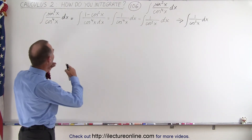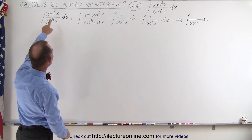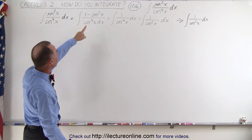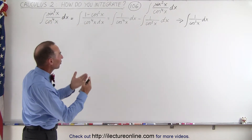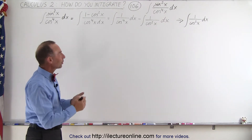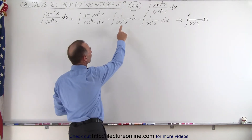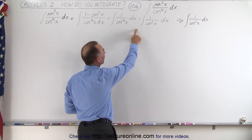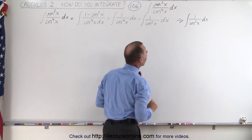We already started some pre-work here. We're going to write the numerator as 1 minus cosine squared of x in such a way that we can write it as two separate integrals. So now it comes down to integrating 1 over cosine to the fourth power of x and integrating 1 over cosine squared of x.